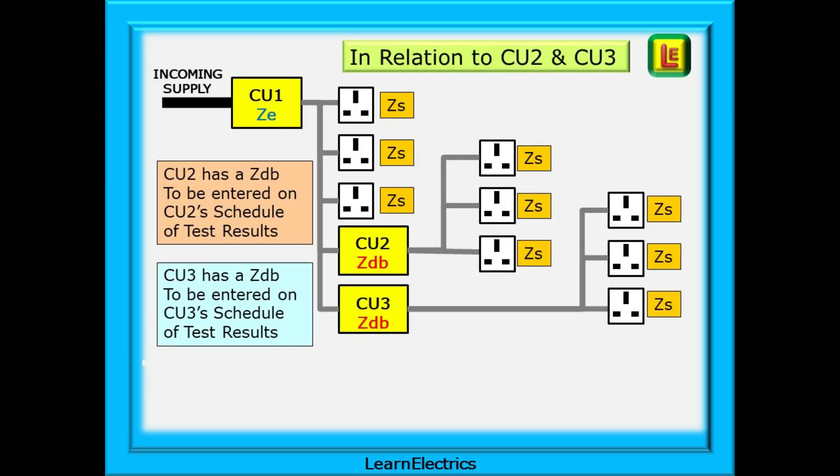In relation to CU2 and CU3, how do we enter the data? We will look at CU2 and CU3 will be just the same. We've had a ZS value for CU2 on the previous slides. This ZS will be entered as a ZDB on the top of CU2's schedule of test results. The socket circuits coming from CU2 will all have their own R1 plus R2.